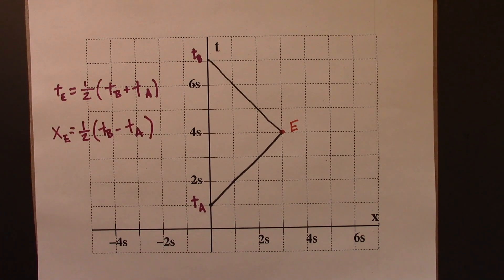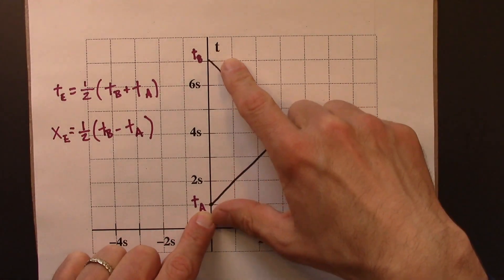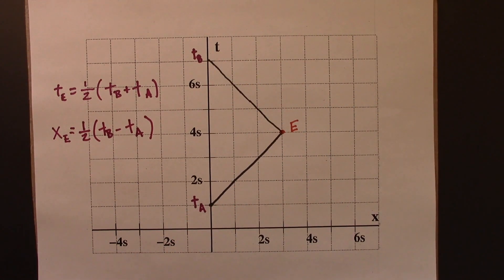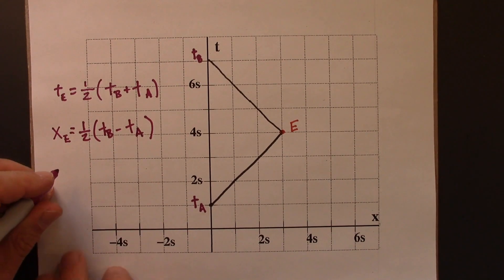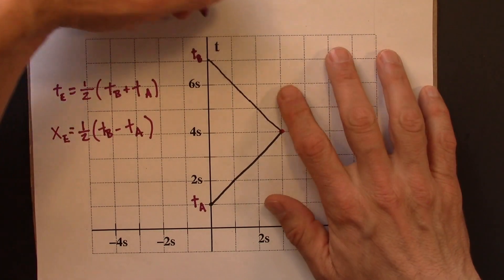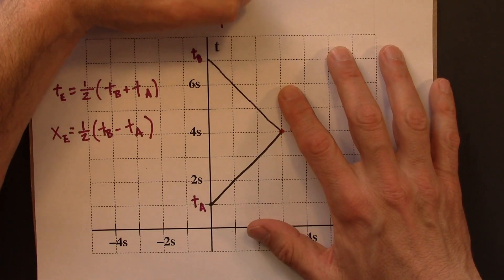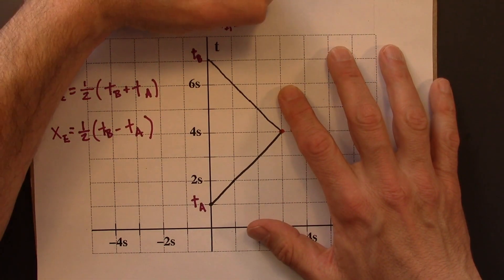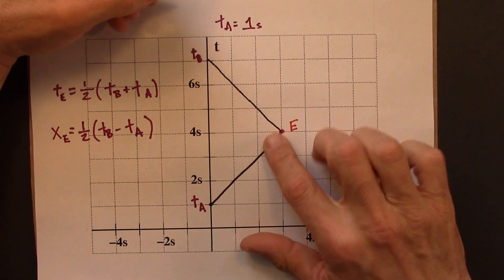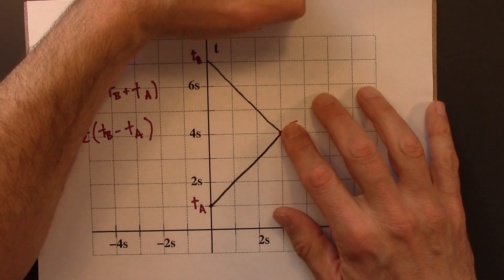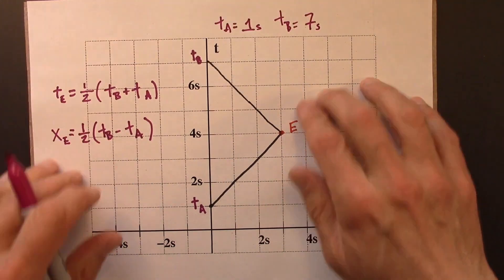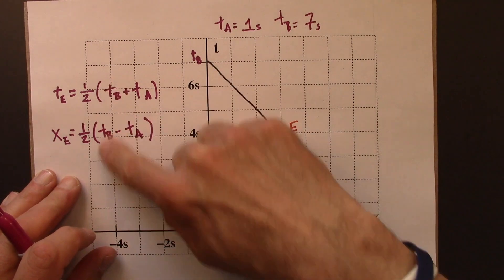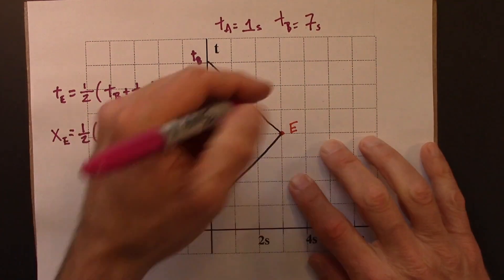Let's plug in numbers for this and you'll see how this works. So TA is one second, TB is seven seconds. Let's plug those into this formula. First let's do TE.